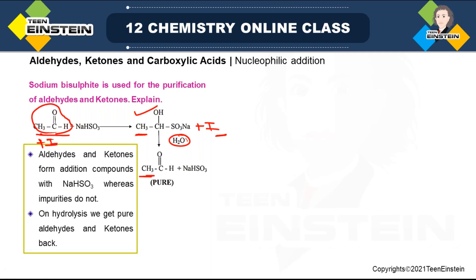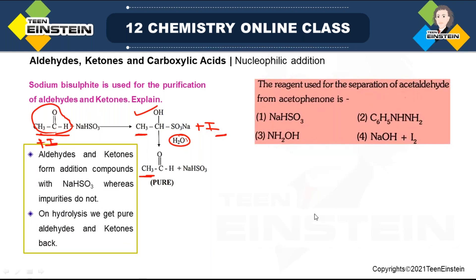Based on this fact, we will see one problem: the reagent used for the separation of acetaldehyde from acetophenone. Here we have to separate acetaldehyde, which has structure CH₃CHO, and acetophenone is Ph-CO-CH₃. When considering these two, acetophenone is a ketone and acetaldehyde is an aldehyde. We have to choose a reagent which can react with only one, because if it reacts with both we will not be able to separate them.